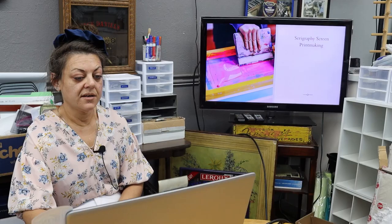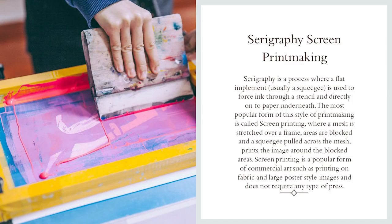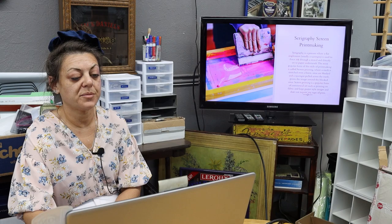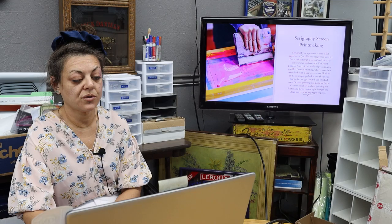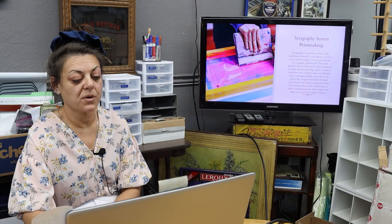Then we have serigraphy, or screen printmaking. Serigraphy is a process where a flat implement, usually a squeegee, is used to force ink through a stencil and directly onto the paper underneath. The most popular form of this style is called screen printing, where a mesh screen is stretched over a frame, areas are blocked, and a squeegee pulled across the mesh prints the image around the blocked areas. Screen printing is a popular form of commercial art, such as printing on fabric and large poster-style images, and does not require any type of press.